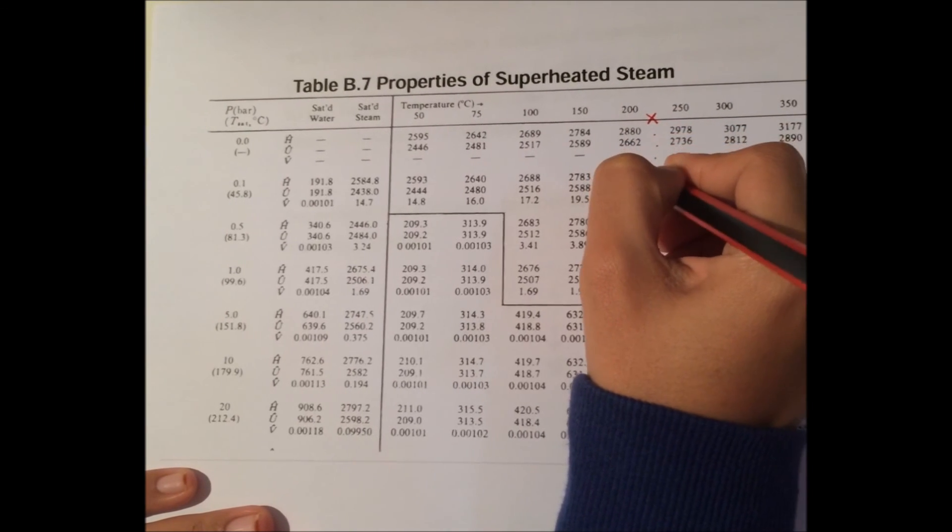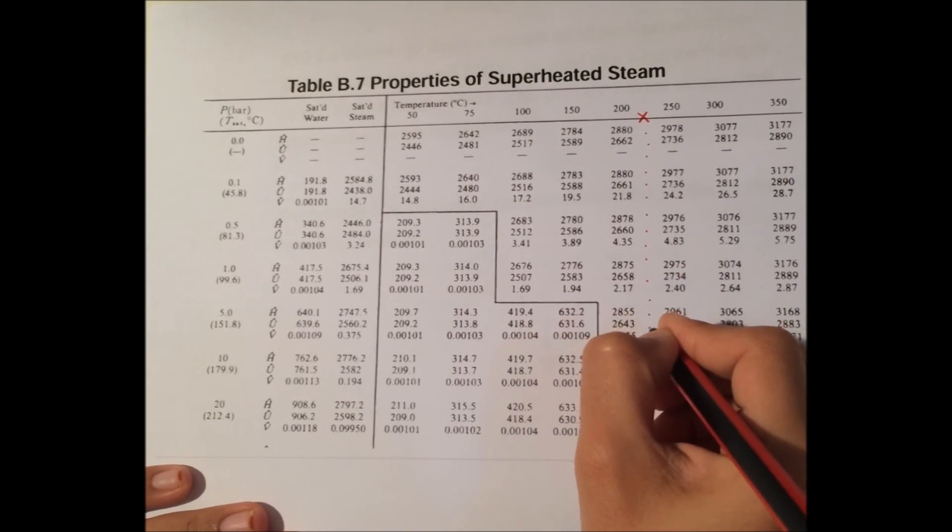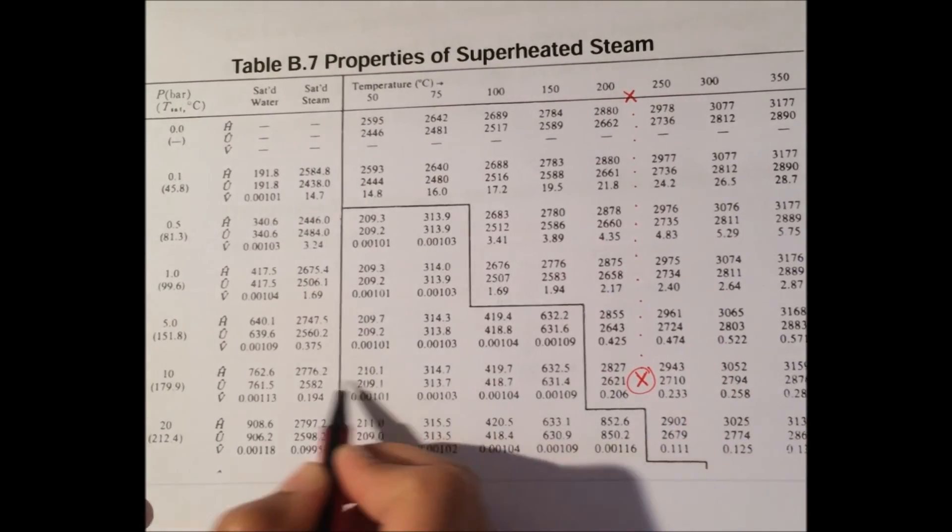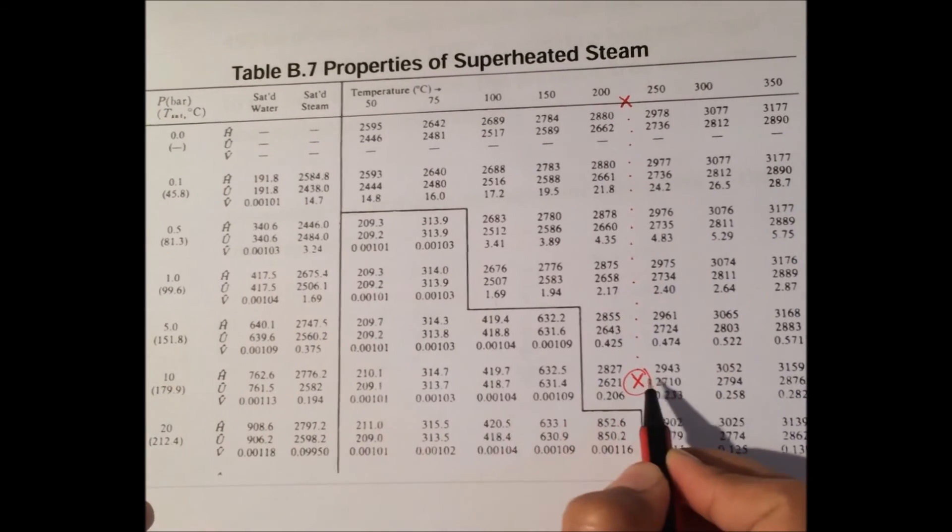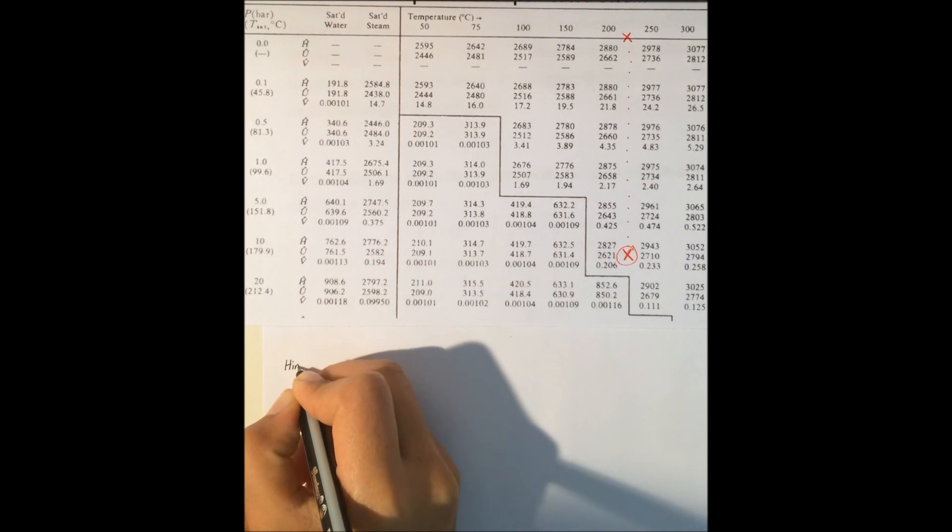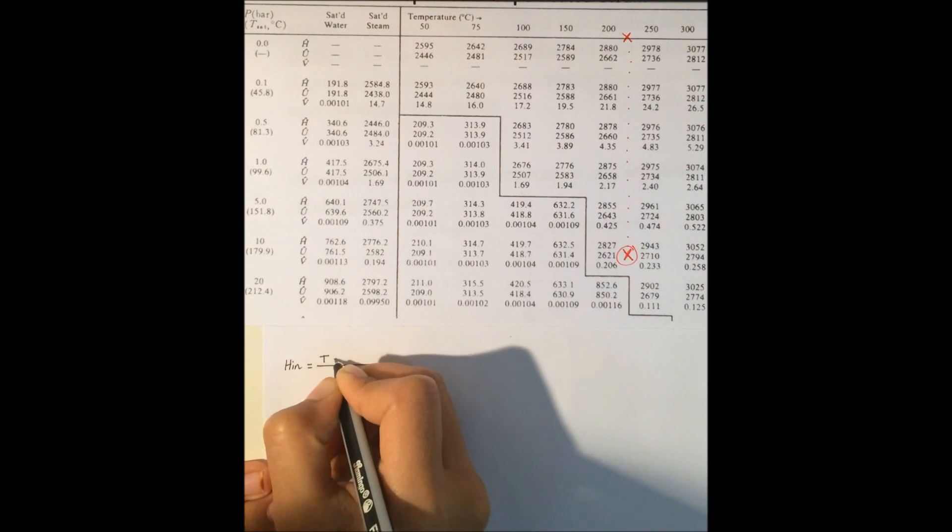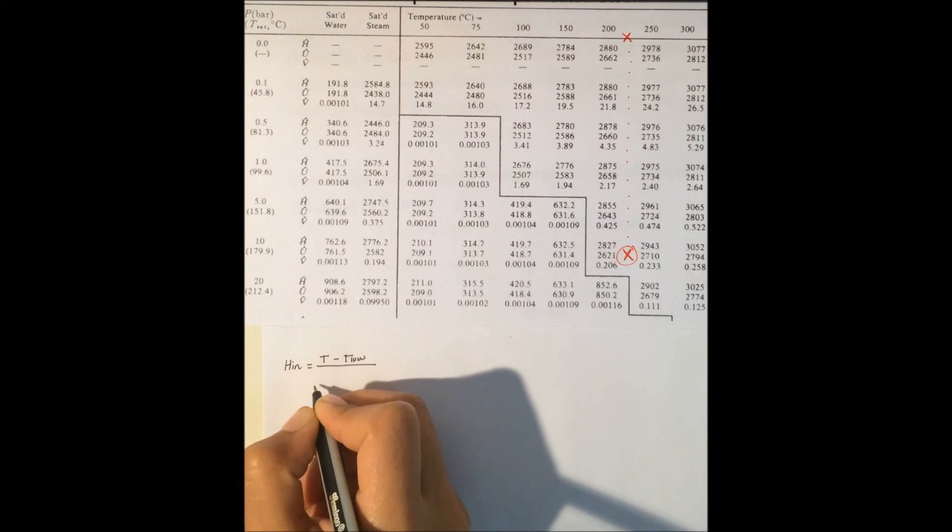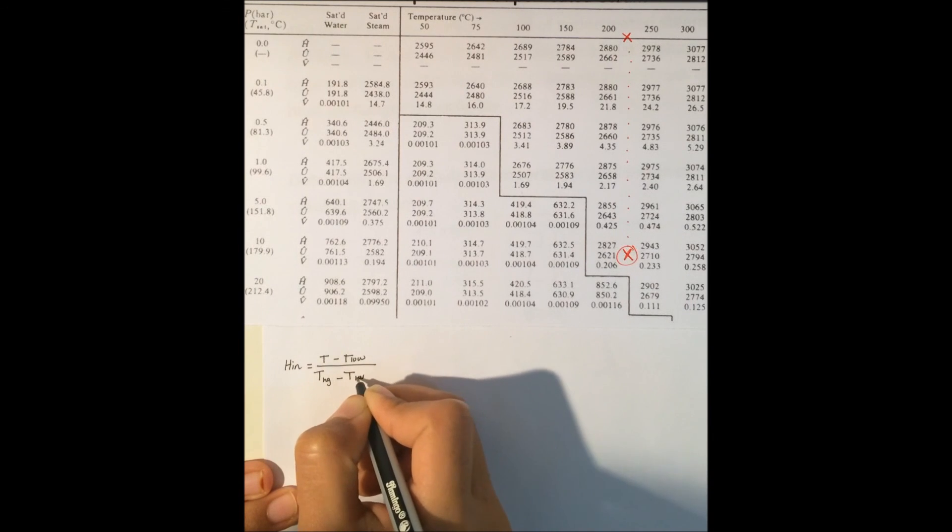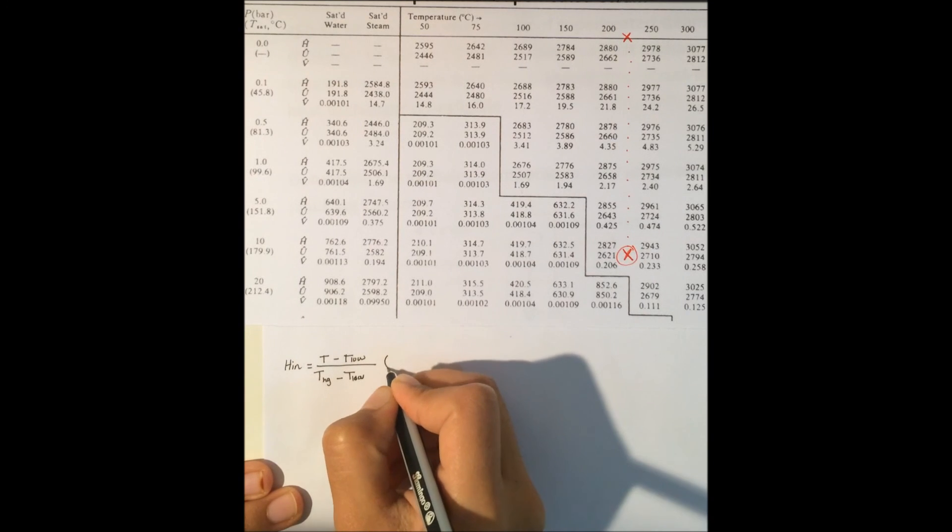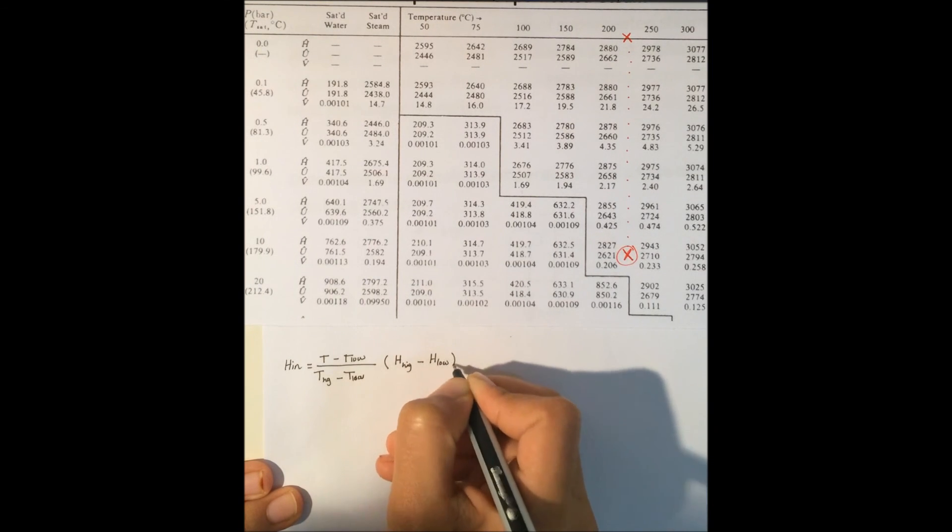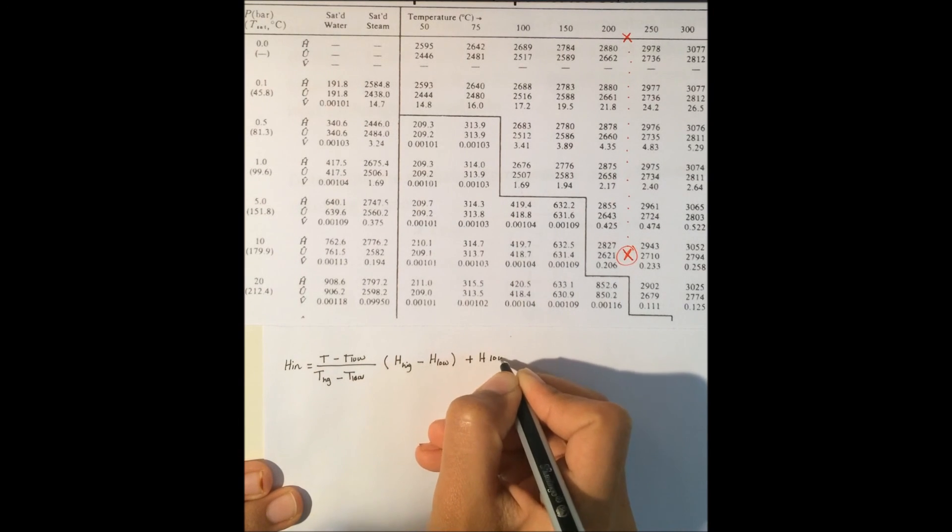As we go down to reach 10 bar, we will stop here which is the cross with 10 bar of pressure. Now I will use the linear interpolation formula: H_in equals (T minus T_low) divided by (T_high minus T_low), multiplied by (H_high minus H_low), plus H_low. Now we will do the calculation.